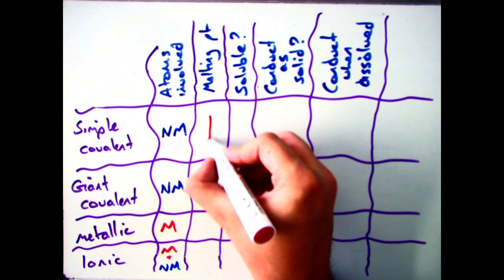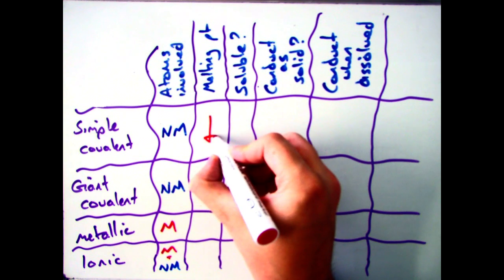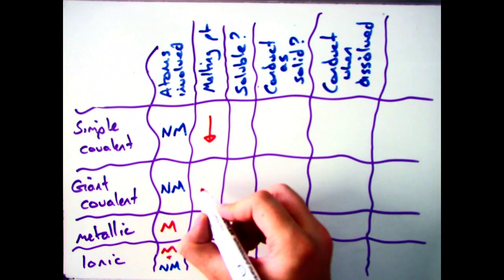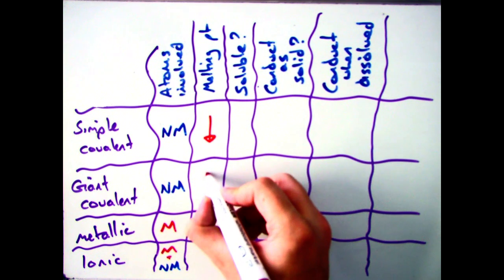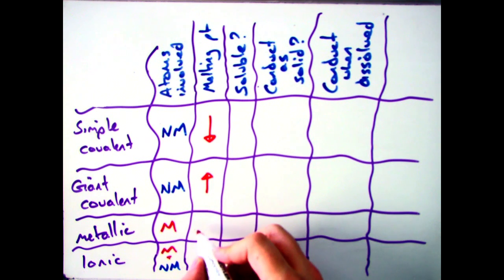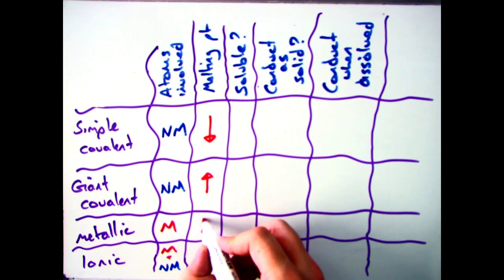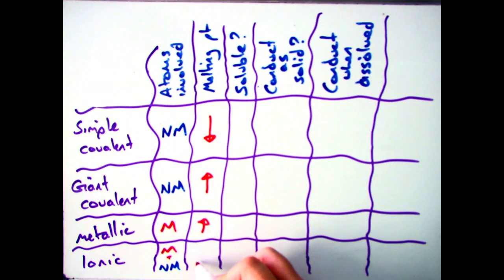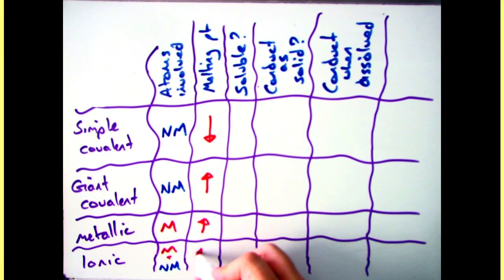If we move on to melting points, the key thing is that the only bonding type with a low melting point is simple covalent. All the other three — giant covalent, metallic and ionic — have high melting points.